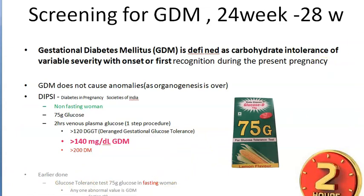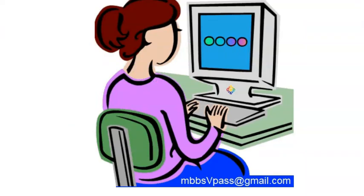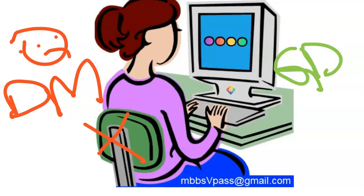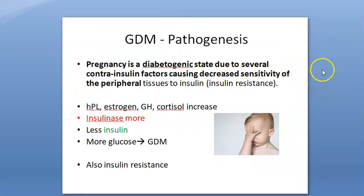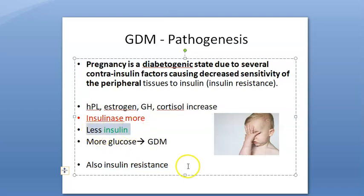HbA1c less than 6.5% is good. Overt DM is more dangerous because it is present during the first trimester when organogenesis is happening, so it can cause fetal anomalies. GDM does not cause as many fetal anomalies. Pregnancy is a diabetogenic state — it increases insulin resistance. Insulinase is more active, so insulin is also being destroyed more, even though secretion increases.